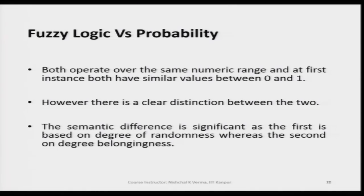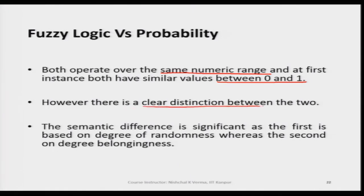Both fuzzy logic and probability operate over the same numeric range, and at first instance both have similar values between 0 and 1. However, there is a clear distinction between the two. The semantic difference is significant: probability is based on the degree of randomness, whereas fuzzy logic is based on the degree of belongingness. Let us understand this distinction through examples.